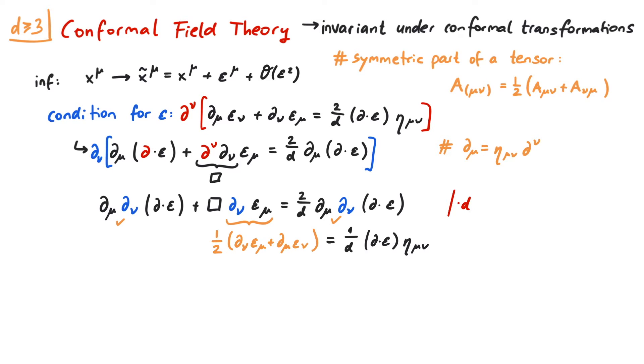We now have several operators acting on the divergence of epsilon. So d times the box operator plus d times the box operator minus 2 times d_mu d_nu from the other side of the equation. Let us contract this with the metric, which yields d times the box operator plus d times the box operator minus 2 times the box operator, altogether acting on the divergence of epsilon equals 0.